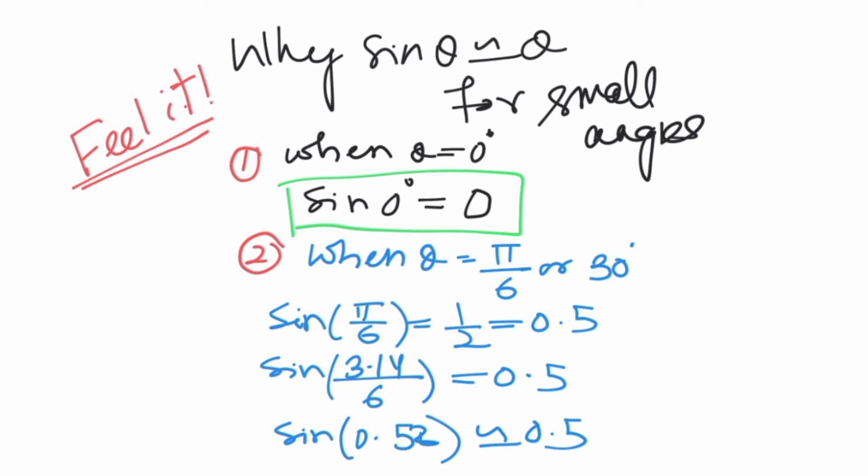Now second, when theta is equal to 30 degrees, that is pi by 6. So sin pi by 6, sin 30 is equal to half, that is 0.5. And what is the pi value? 3.14.